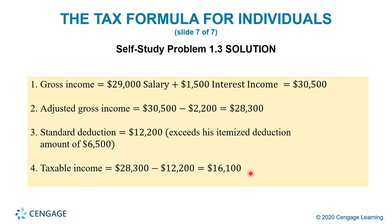To go further with that number, you would find his tax rate in the table, multiply it, and it will give you the actual tax amount. Then you would go through the rest of the formula to determine whether he has a refund or he owes, but in this problem they stop at this point.